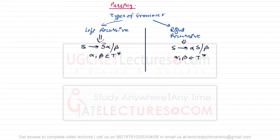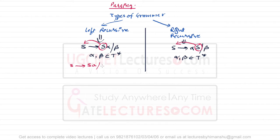In the case of left recursive grammar, S is calling itself on the left side, creating recursion. In the case of right recursive grammar, S is calling itself on the right side. Let me give a simple example: a left recursive grammar S derives Sa | b, and a right recursive grammar S derives aS | b.